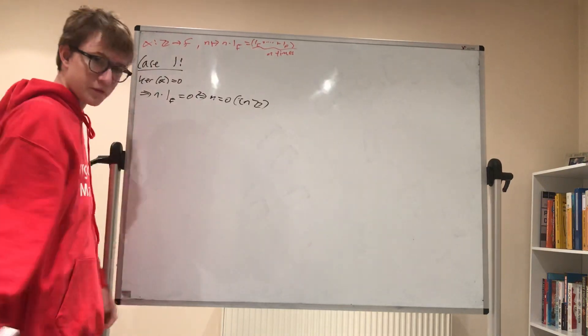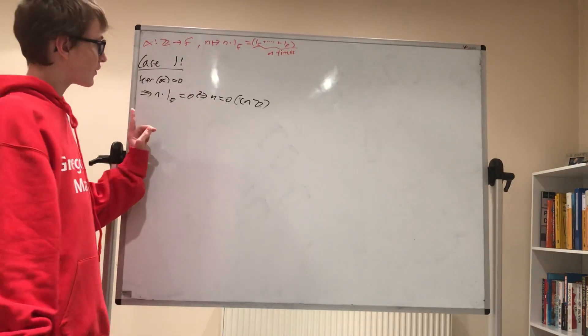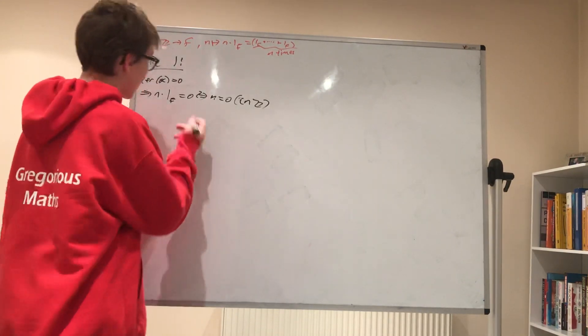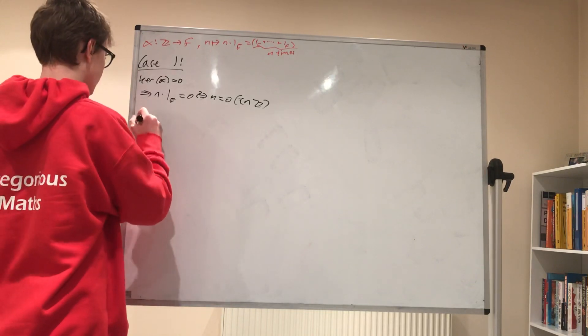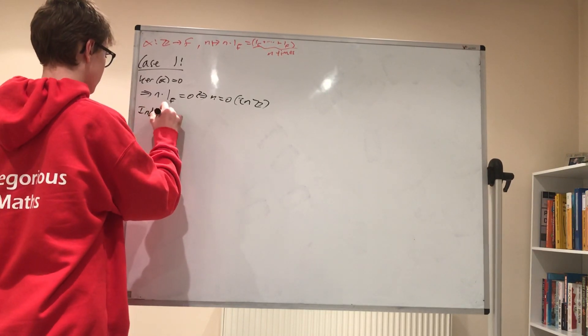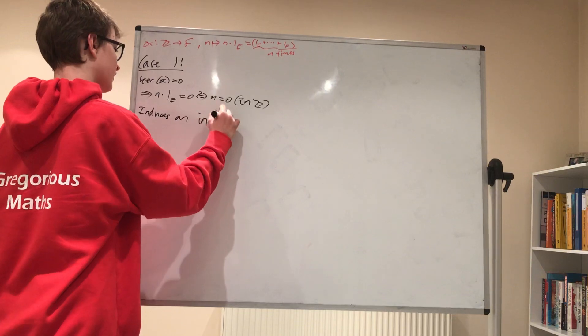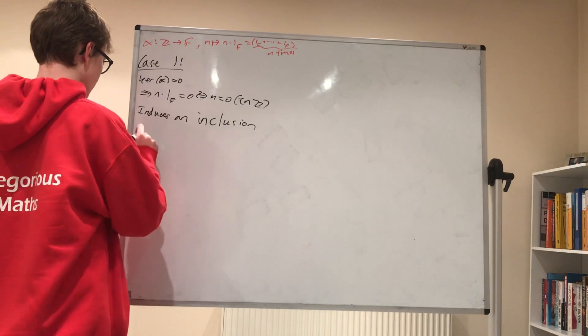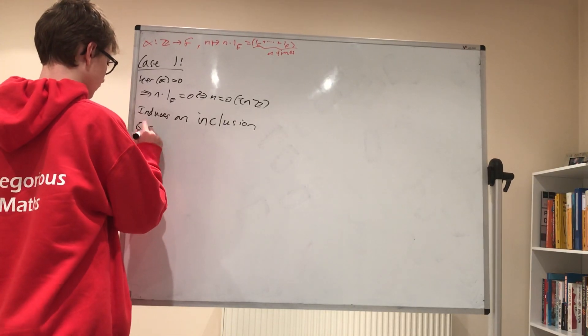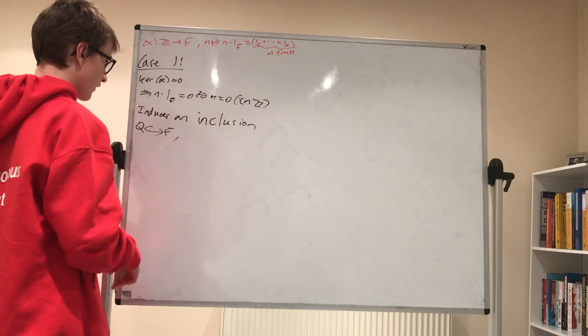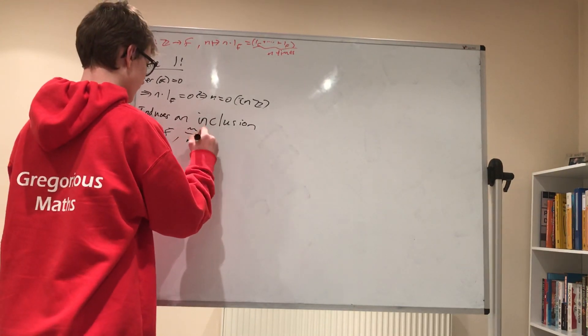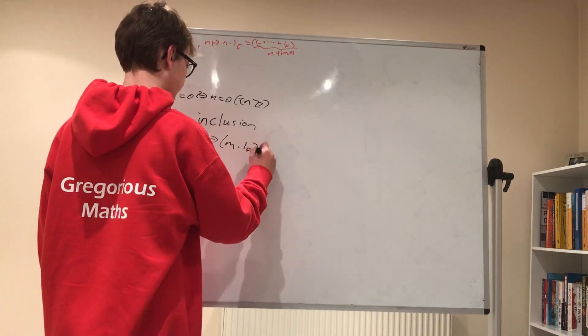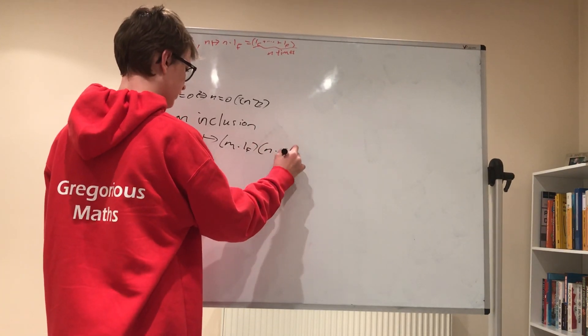What happens is non-zero elements, invertible elements, map to non-zero elements. And so this map right here induces an inclusion from the rational integers to f which sends m over n to m times the identity on f and then n times the identity on f inverse.